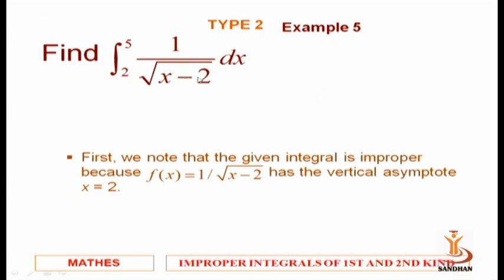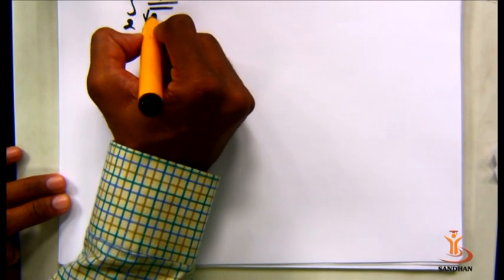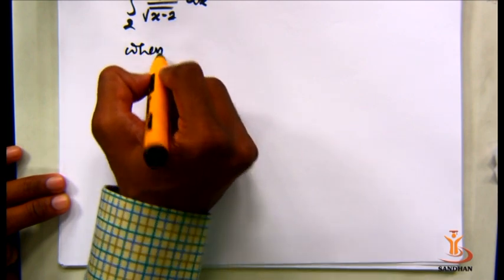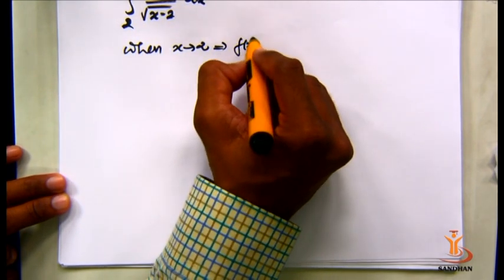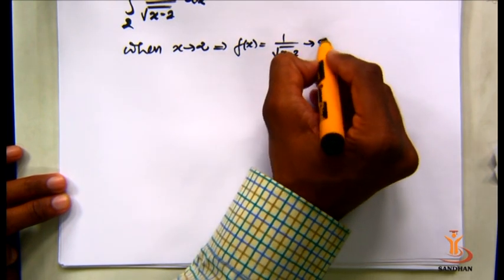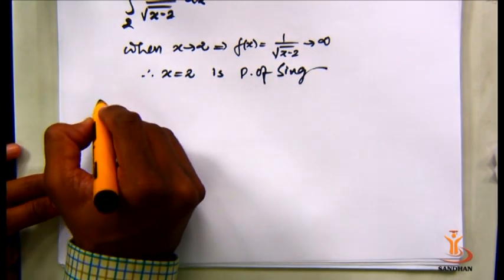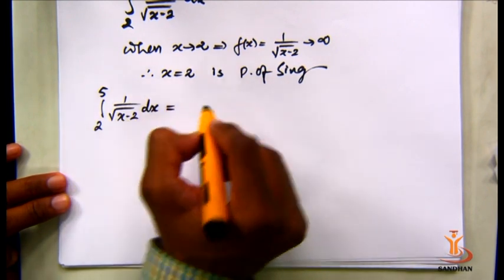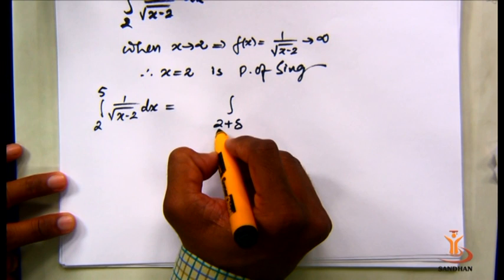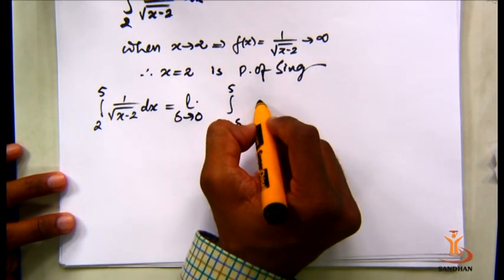Let us consider some examples. First: the integral from 2 to 5 of 1/√(x-2) dx. When x tends to 2, putting x=2 gives 1/0, which tends to infinity — so f(x) = 1/√(x-2) tends to infinity, making x=2 a point of singularity. We treat this as a Type 2 improper integral with lower limit 2+delta (a plus delta, where a=2), as delta tends to zero.